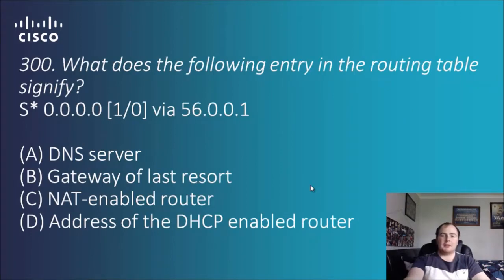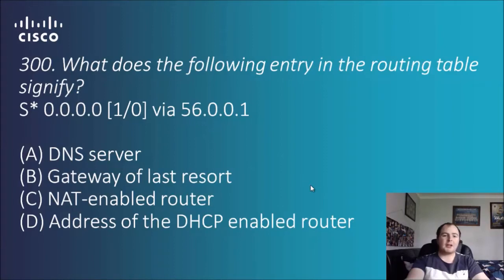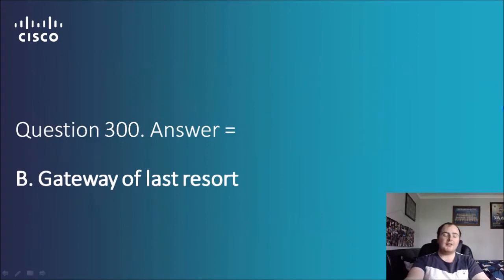Question 300: what does the following entry on the routing table signify — S with an asterisk and then four zeros, with an administrative distance and 'via'? The options include DNS server, gateway of last resort not enabled, router address of the DHCP. If you saw my other video regarding gateway of last resort, you'd know that is a gateway of last resort address, which is sort of the default route that it goes through — and that is the answer.